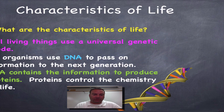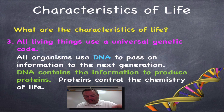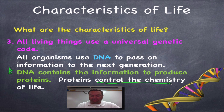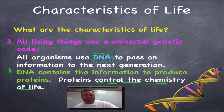All living things use a universal genetic code — DNA. DNA contains the information to produce proteins, and proteins control all of the chemistry that goes on inside a living thing, so this is really important. We're going to have two full chapters on DNA this semester, so I'll hold off on giving too much detail here.